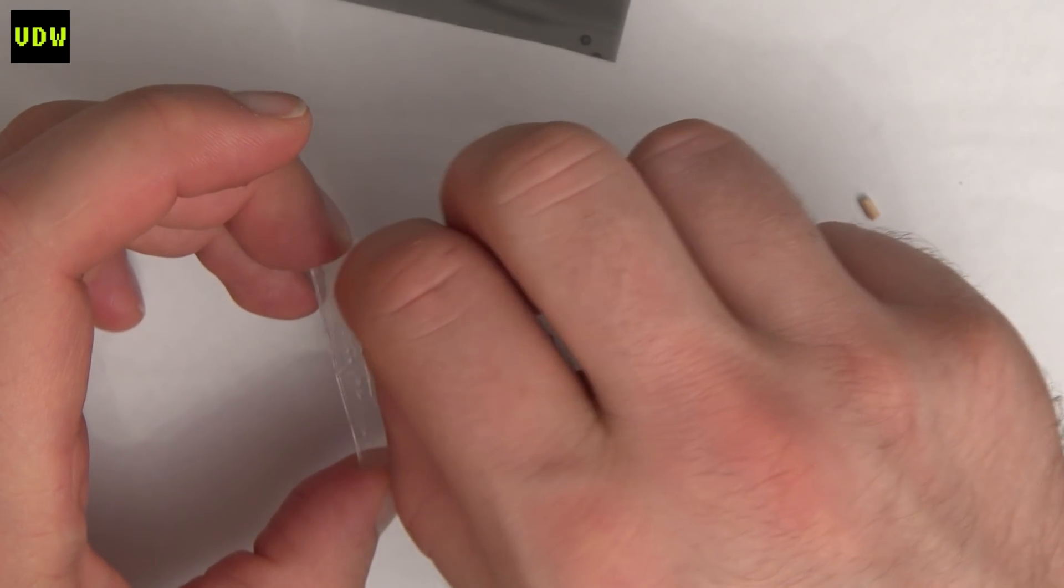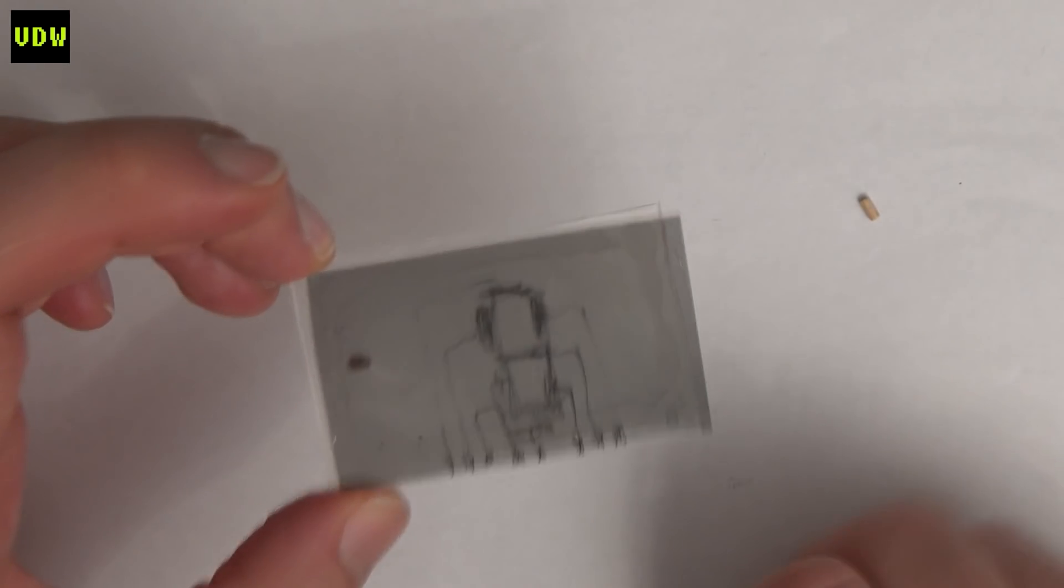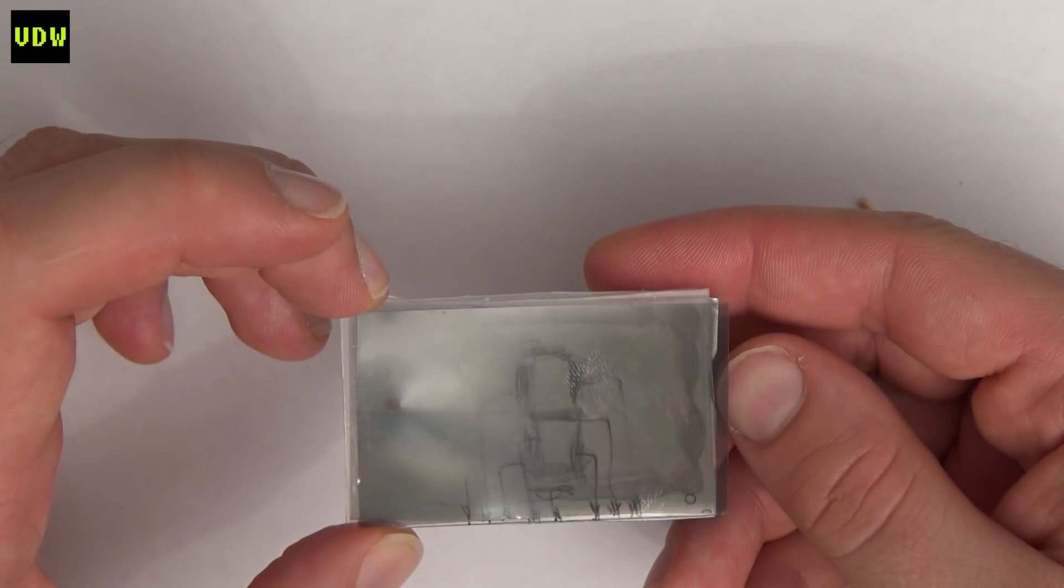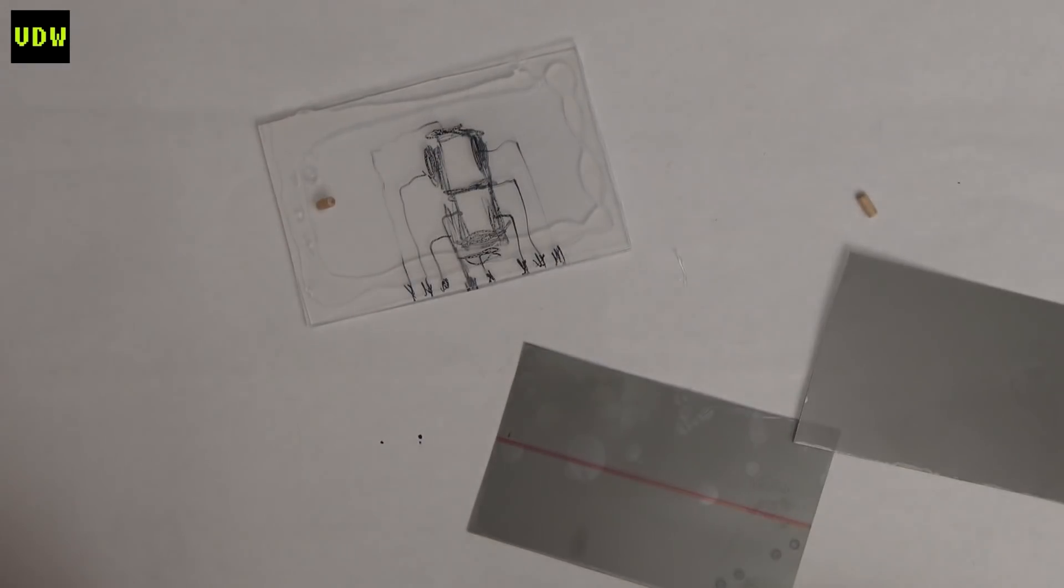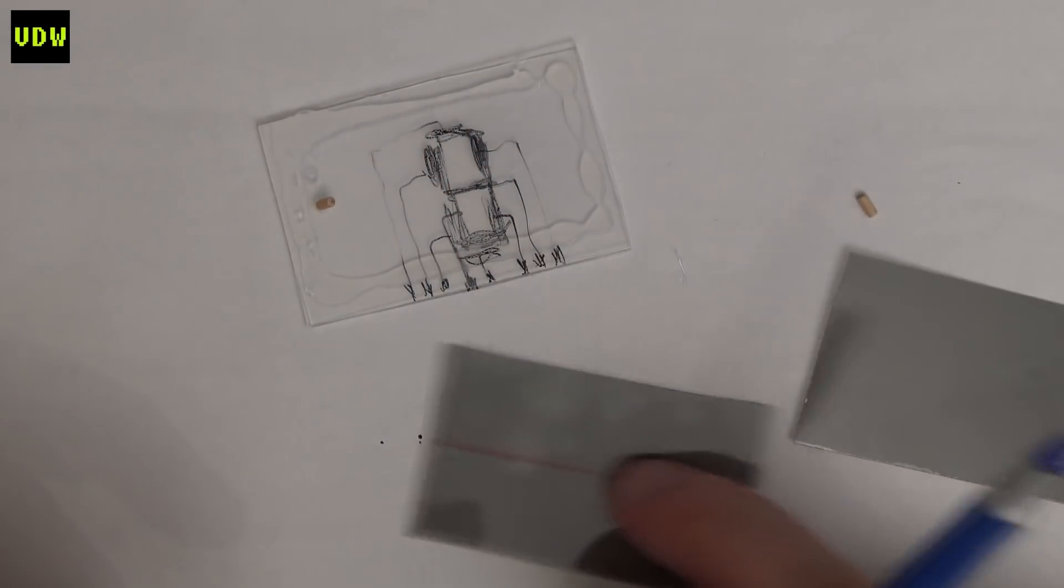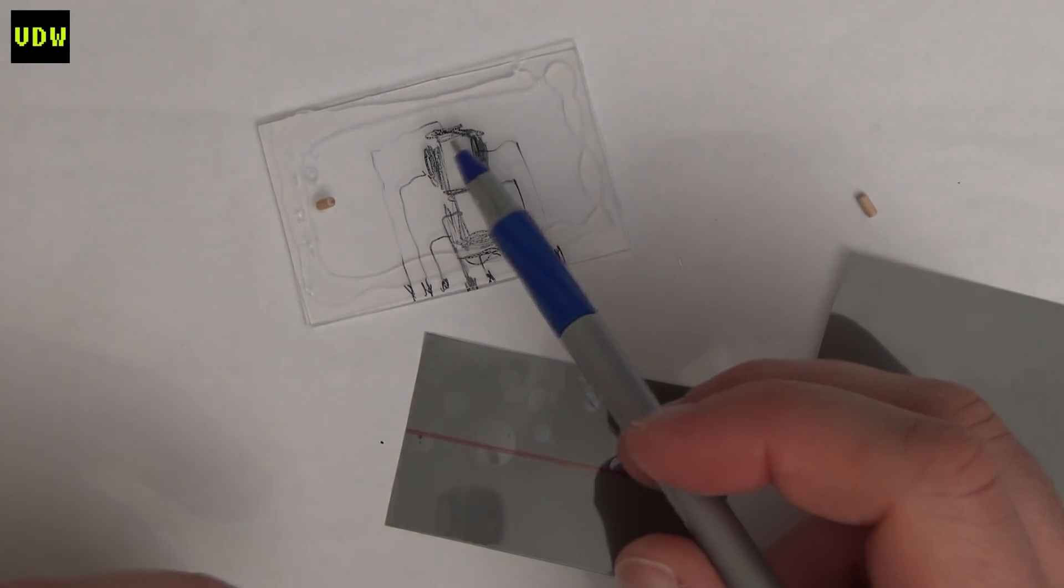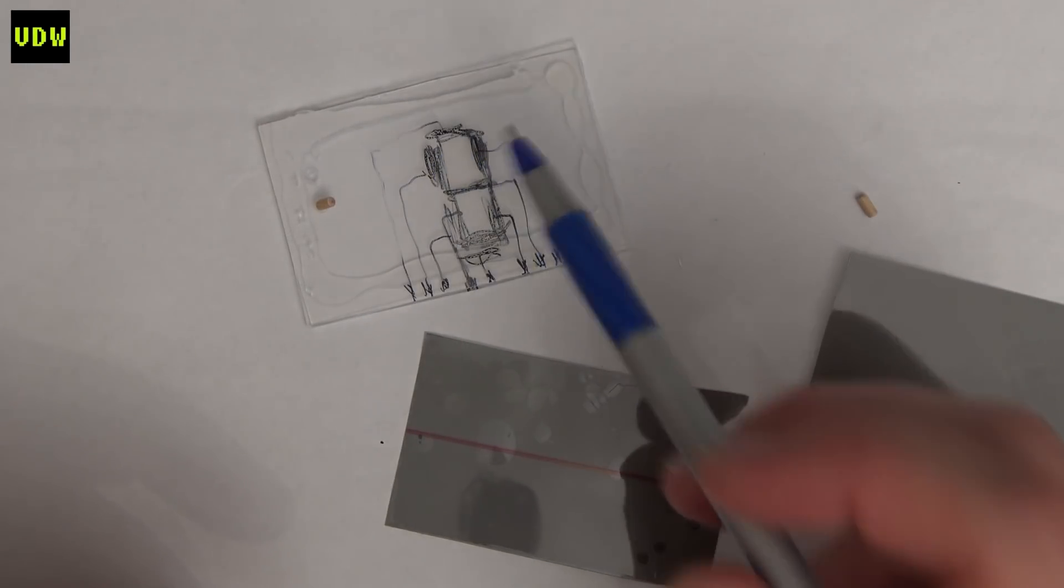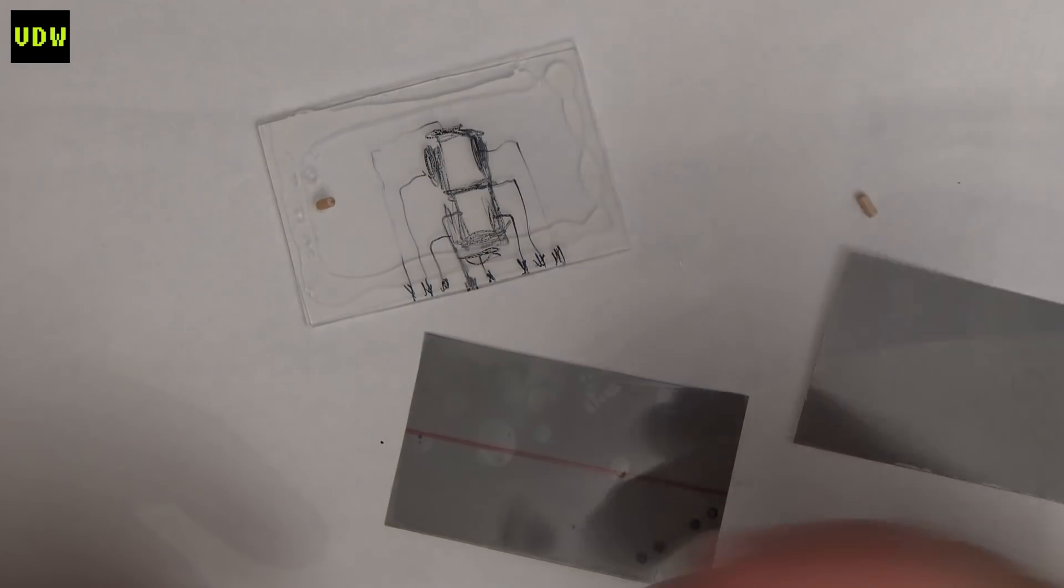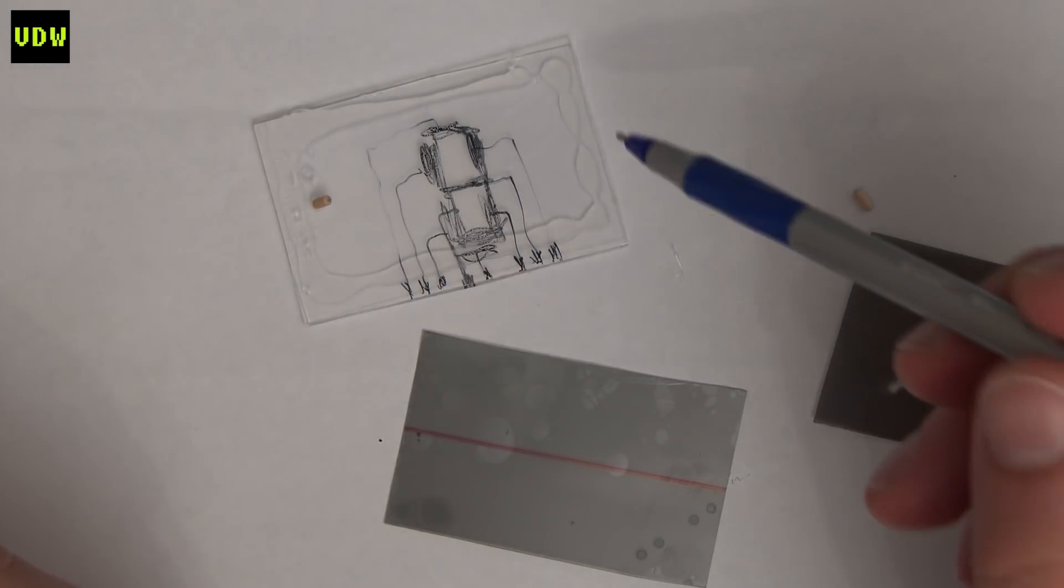And then they would add this polarizer in front and this polarizer in the back, and that would be the LCD. Why do they need polarizer? Well it's because liquid crystal can only bend polarized light. So we need the light coming in to be polarized for the bending effect in the liquid crystal to take place.